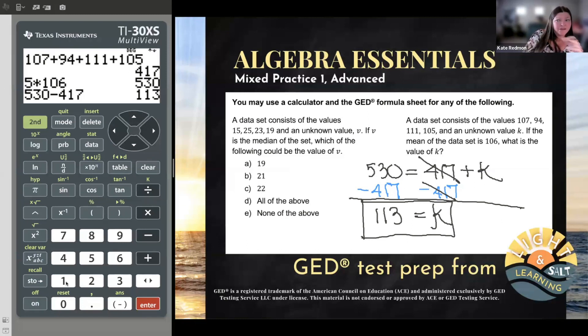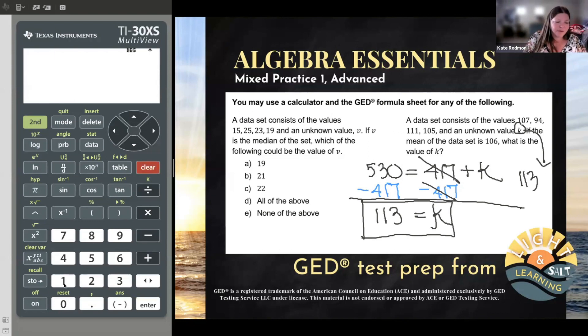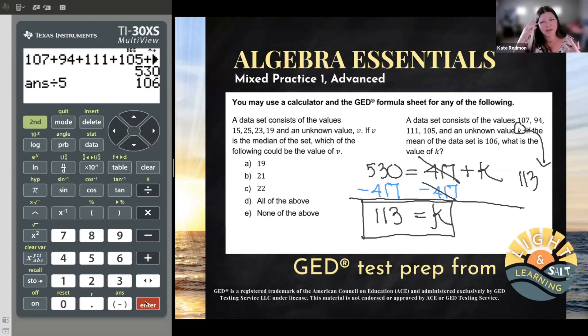I'm going to plug that in like it's one of the numbers in the data set and see if it gives me a mean of 106. So if that unknown value K really is 113, then I should be able to total this list of numbers. 107 plus 94 plus 111 plus 105 plus this value that I'm saying K is, I say K is 113. And I need to total it. So I'm going to press enter. There's the total. And then I should be able to divide that by how many numbers is that in the data set? Five. Does it give me a mean of 106? It does. So I check my work backwards with the thing I'd better understand finding mean. And I can see that my work checks.